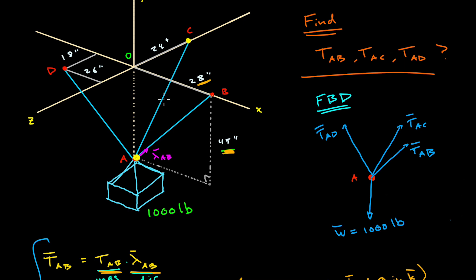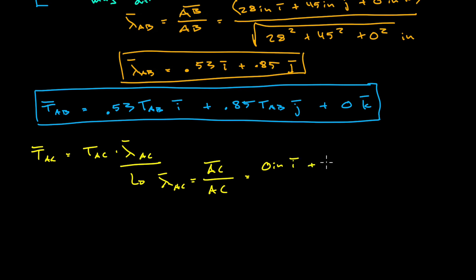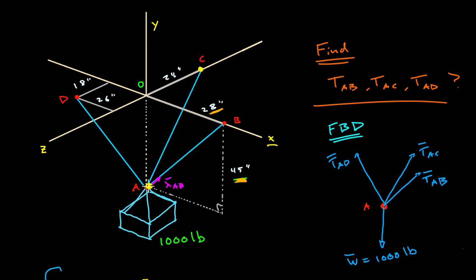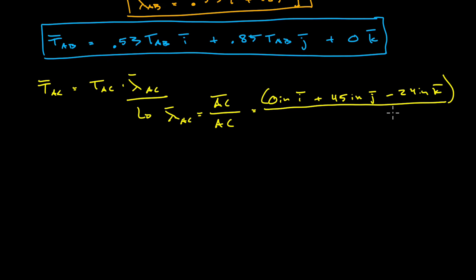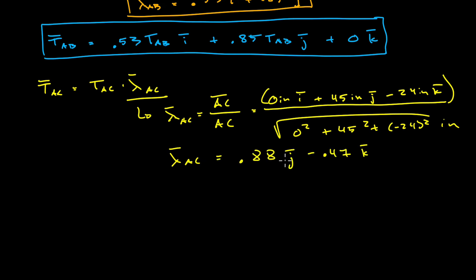Pretend you're standing at point A and figure out how much you need to go in each of the three coordinate directions to get to point C. Noting that vector AC is in the YZ plane, you don't have to displace yourself at all in the X direction — so we've got zero inches in the I direction. We also have to go upward along the Y axis by 45 inches, and we actually have to go along the negative Z axis a distance of 24 inches. If you're standing at point A, in order to get to point C you're going in the negative Z direction. Point C is further behind point A along the Z axis, which is why we have the negative sign.